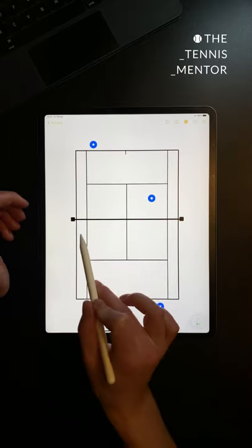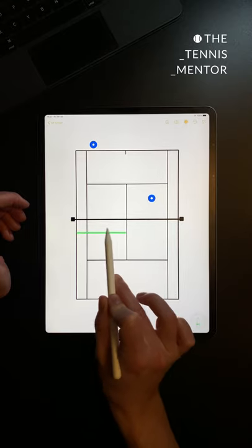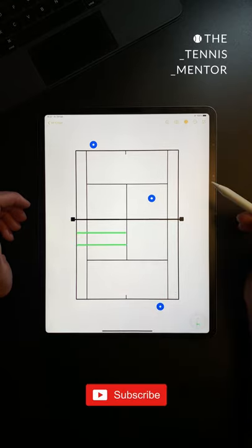What I like to do is to split the service box into three sections. We've got the front third, the middle third, and the back third of the service box.